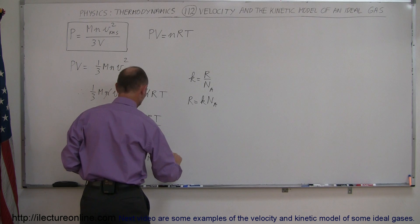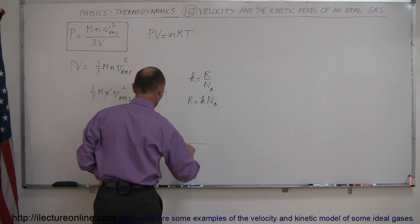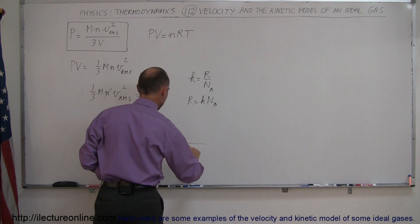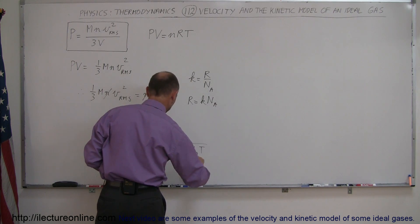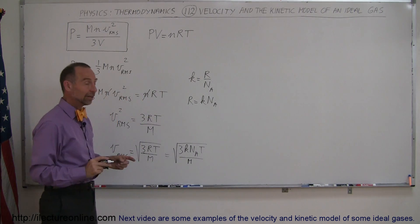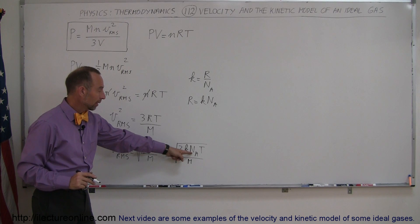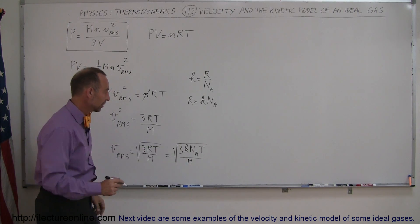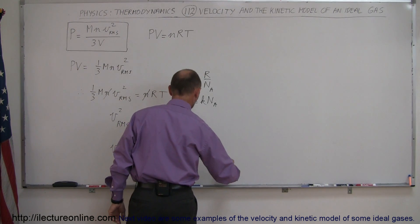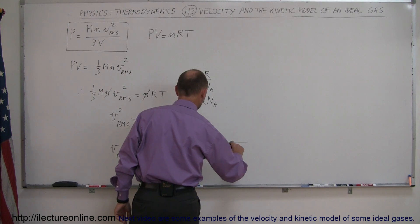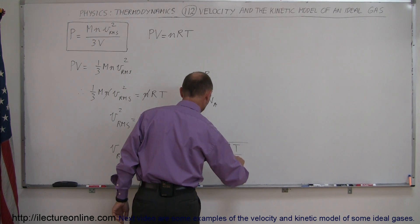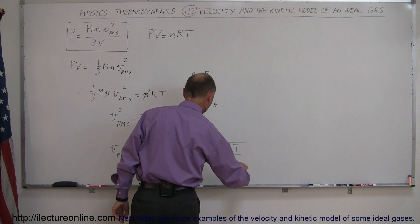So if we do that we get it equal to the square root of 3 times K times Avogadro's number times the temperature divided by the molar mass. And then if we move the Avogadro's number down here, we can say this is equal to the square root of 3 times KT divided by the molar mass divided by Avogadro's number.